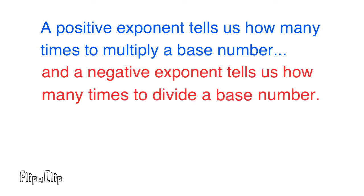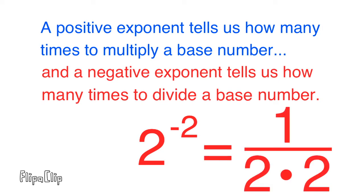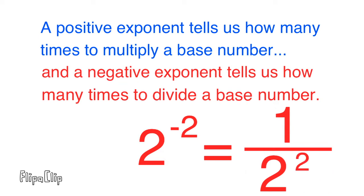The negative exponent tells us how many times to divide a base number. In this example the exponent is a negative two, and this tells us how many times to divide the base number. This can be represented as one over two times two, or one over two to the power of positive two, or one fourth.